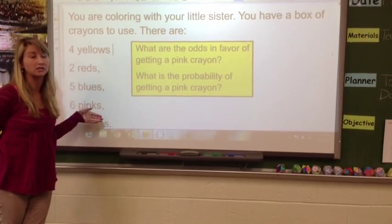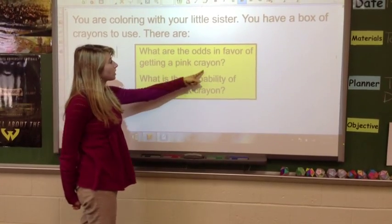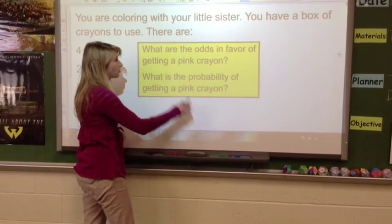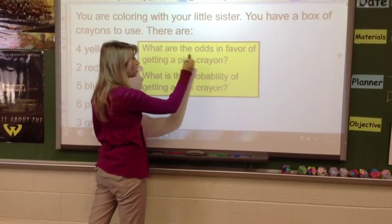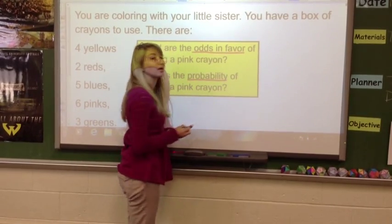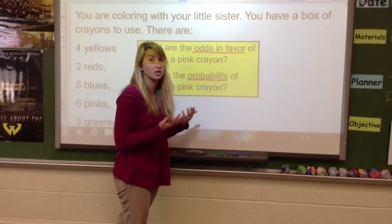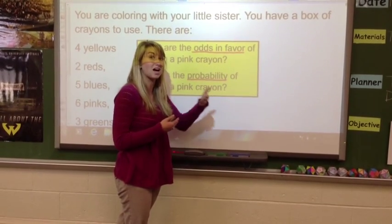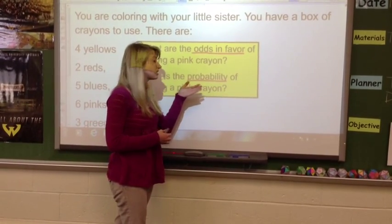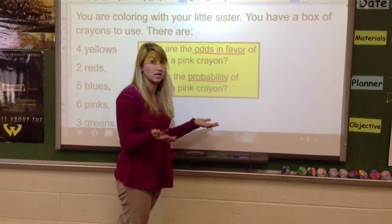So these are your total amount of crayons. Now there are two things we're going to talk about: what are the odds in favor of getting a pink crayon, and what is the probability of getting a pink crayon? The difference between the two is that odds in favor talks about the odds of something occurring compared to the odds of all the other options, versus probability talks about what is the chance that something can occur compared to all of the options that you have.